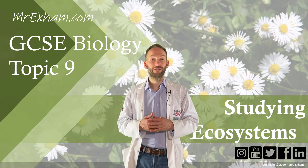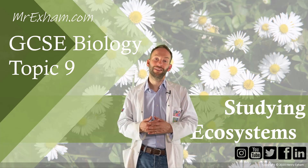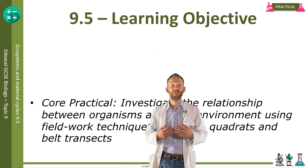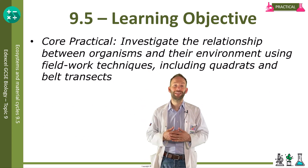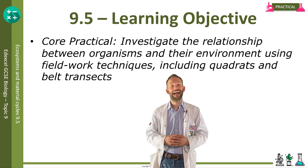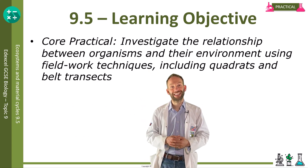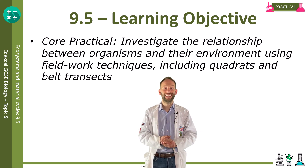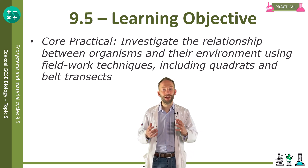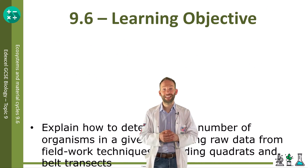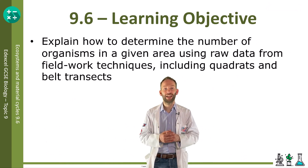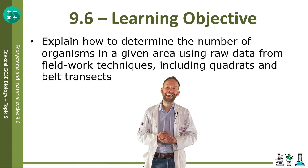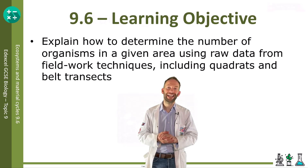Objective 9.5, Core Practical: Investigate the relationship between organisms and their environment using fieldwork techniques including quadrats and belt transects. Objective 9.6: Explain how to determine the number of organisms in a given area using raw data from fieldwork techniques including quadrats and belt transects.